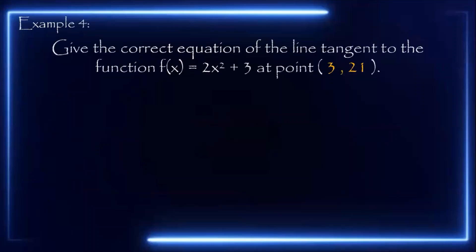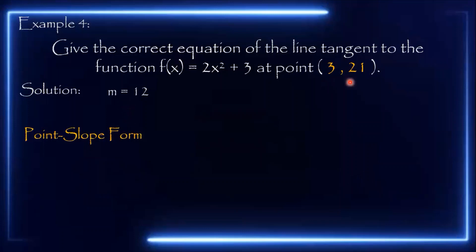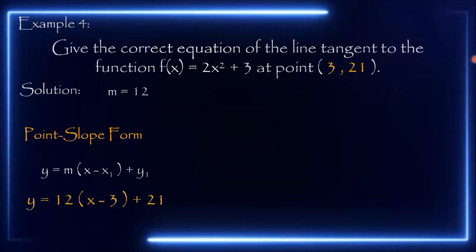Example number 4: give the correct equation of the line tangent to the function 2x squared plus 3 at point (3, 21). This is the same function from example 2, where the slope is 12. Starting with the point-slope form, we substitute m = 12, x₁ = 3, and y₁ = 21 into y = m(x − x₁) + y₁. That gives y = 12(x − 3) + 21. This is the point-slope form.